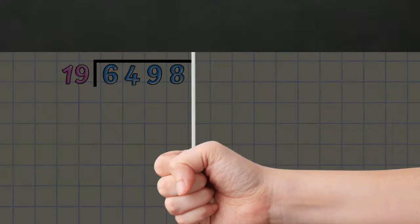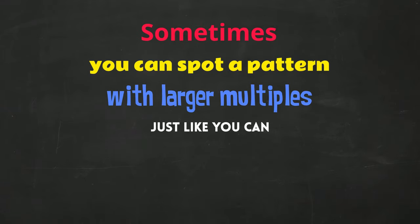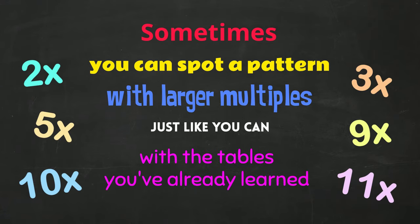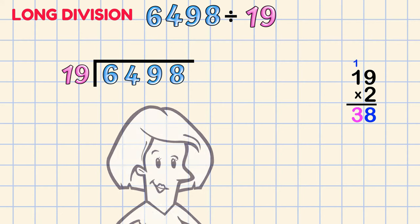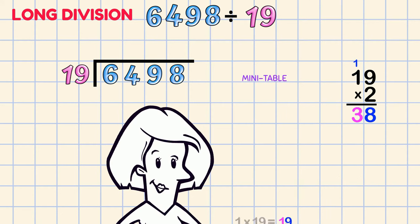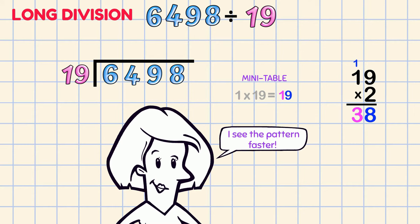Sometimes, you can spot a pattern with larger multiples, just like you can with the tables you've already learned. Let's multiply! 19 x 2, 2 9s are 18, 1 2 is 2 plus 1 is 3. If I make a mini table starting with 1 times a number I see the pattern faster!